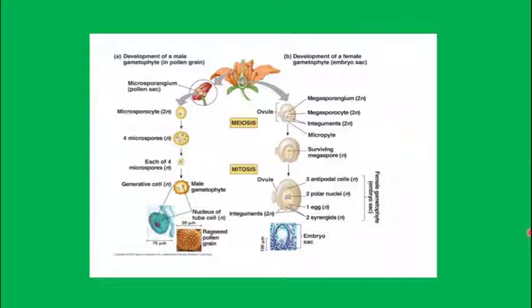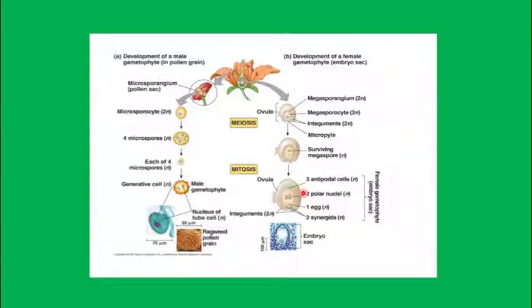In megasporogenesis, the megasporangium contains the megasporocyte, which is diploid; the nucellus is also diploid. The MMC undergoes meiotic division — only one megaspore survives, three degenerate. The surviving megaspore is haploid. In the embryo sac: antipodals are haploid, two polar nuclei in the center are haploid, the egg cell is haploid, and two synergids are haploid. Only at maturity do the two polar nuclei fuse to form a diploid nucleus.